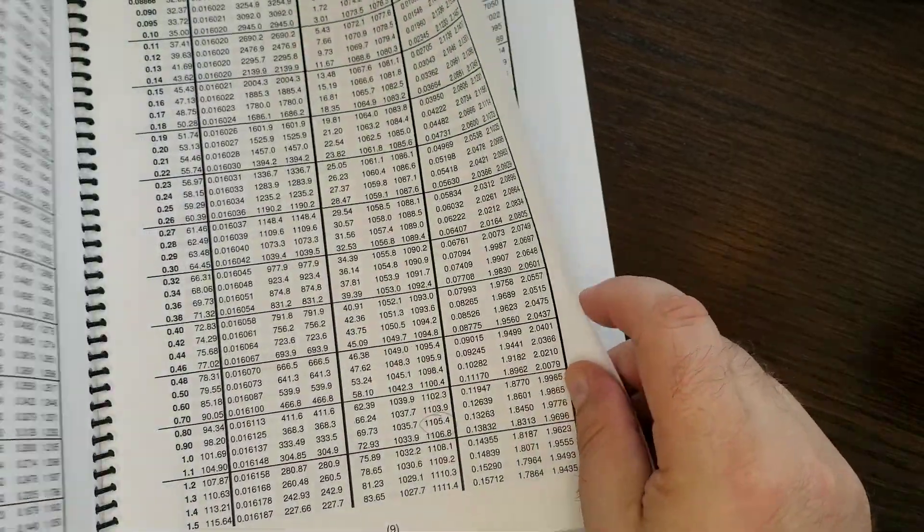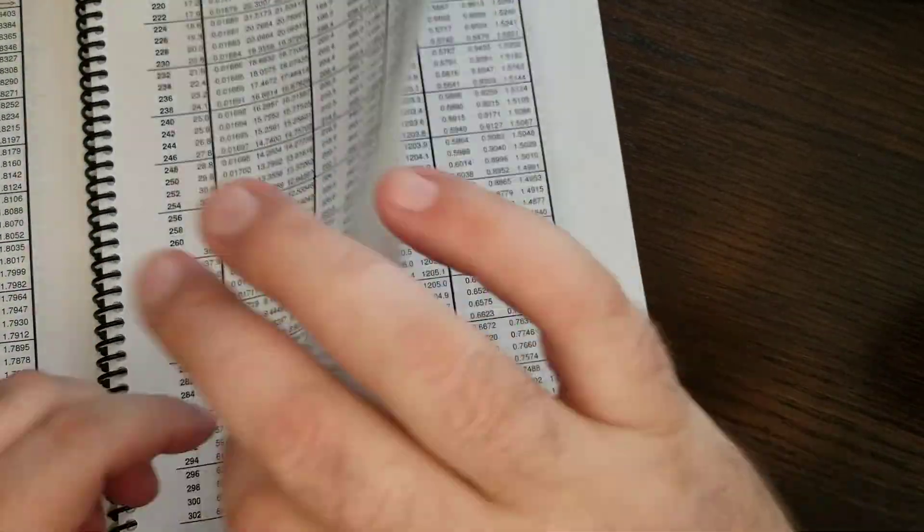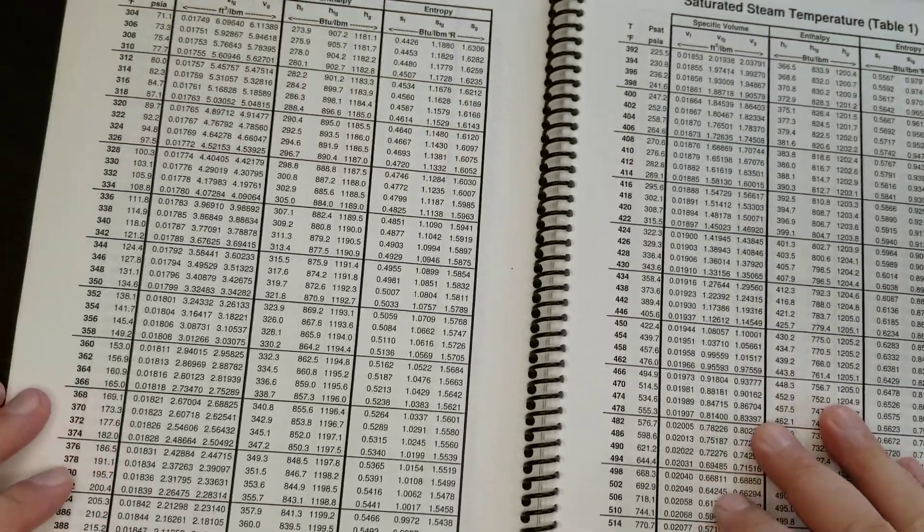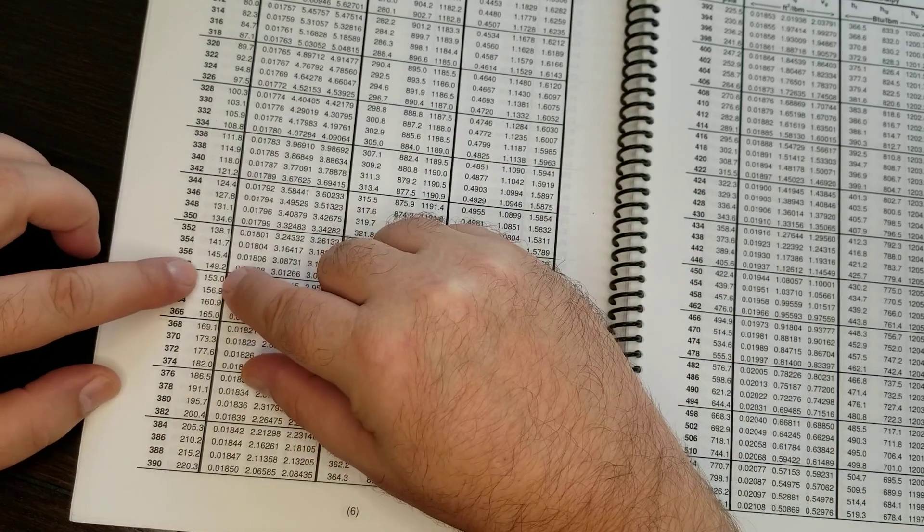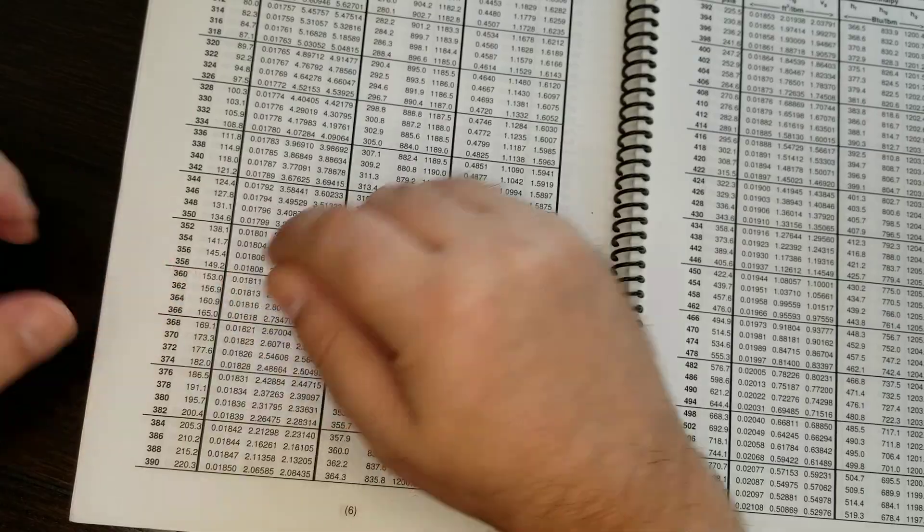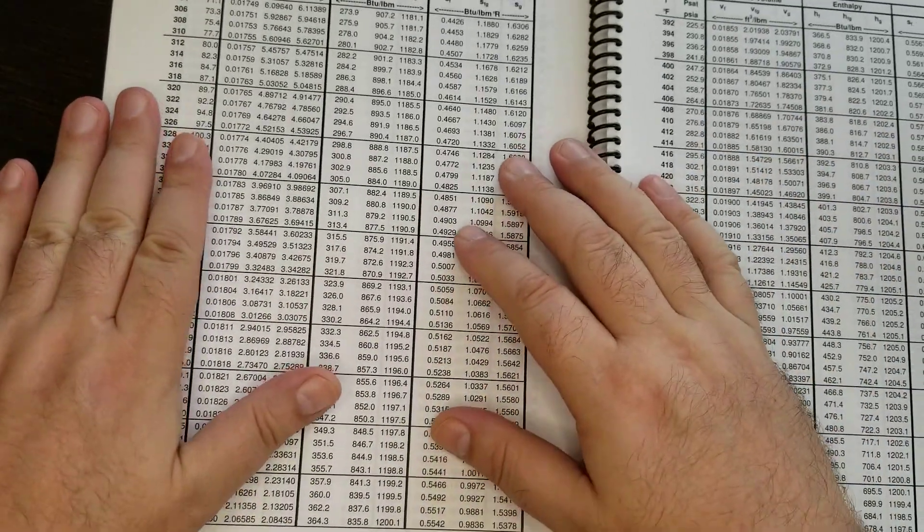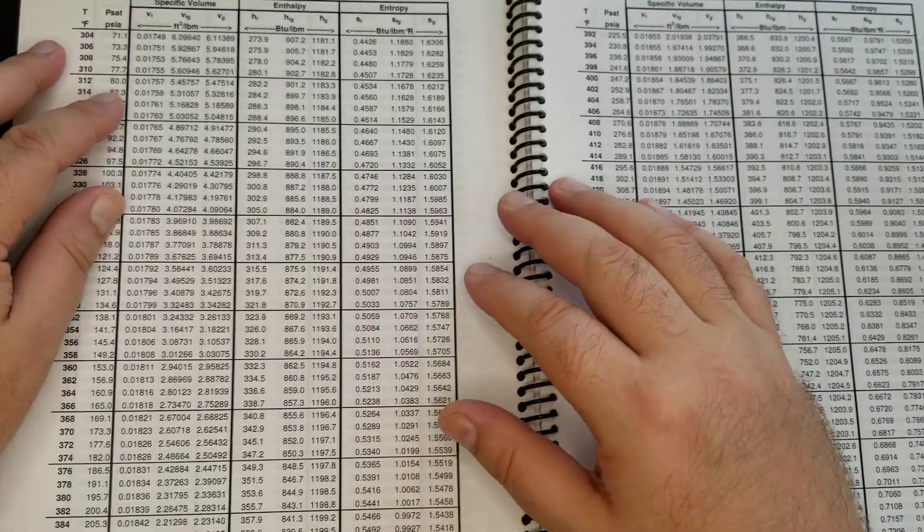Now, if I go to table one and I look for 360 degrees Fahrenheit, yep, 153 degrees. So it's more accurate. Anyway, so that's the temperature pressure, that's table one, table two. Those are the ones we use.